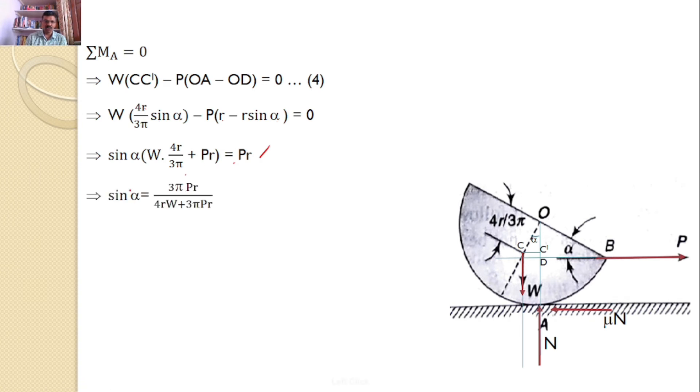Now, our interest is to find sin α. So sin α is equal to, after simplification, you will get (3π Pr)/(4RW + 3π Pr). Now P value we already calculated from previous equation number 3, that P value is equal to μW.